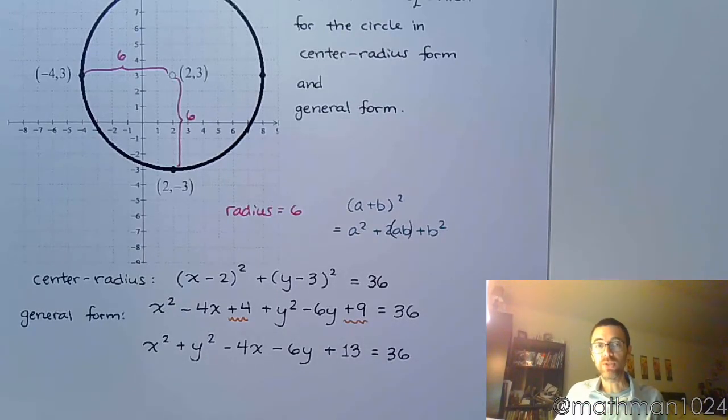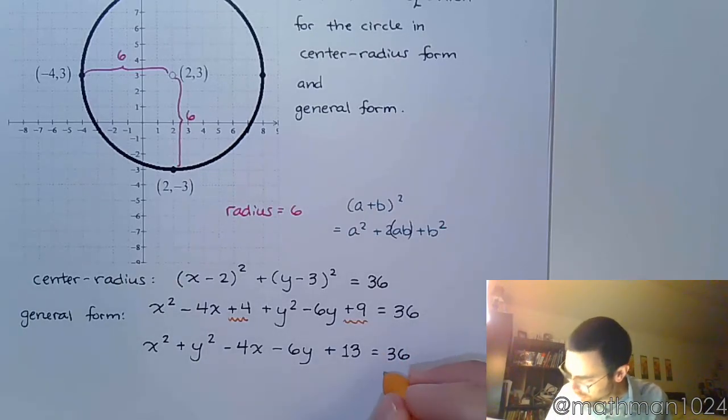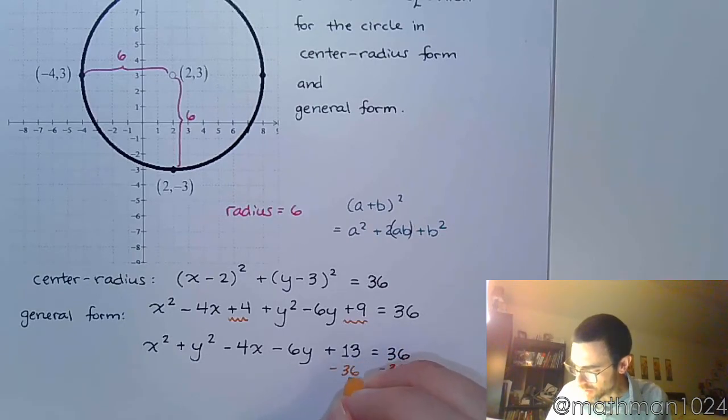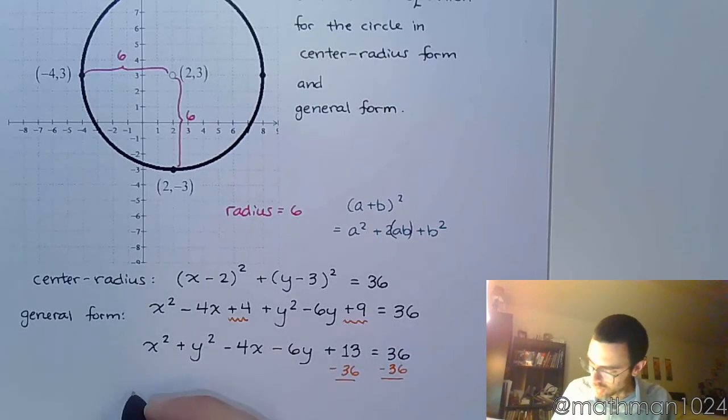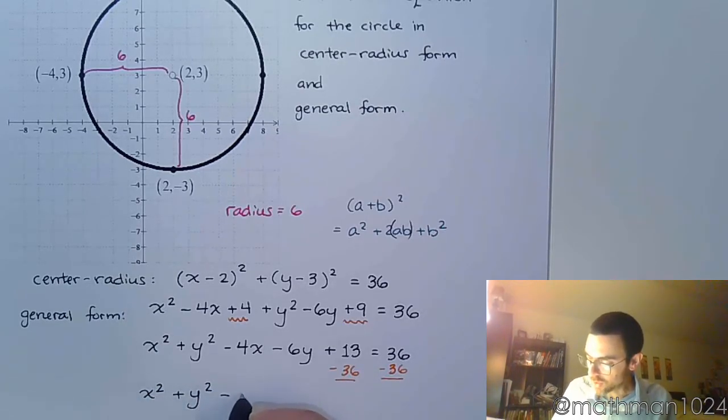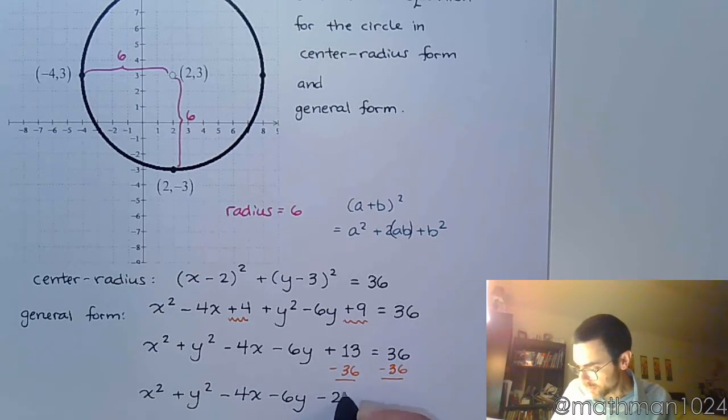And to finish putting this in general form, we're going to move the 36 over here to the left side by subtracting it, because in the general form you have 0 on the right side. So here we go: x² + y² - 4x - 6y - 23 = 0.